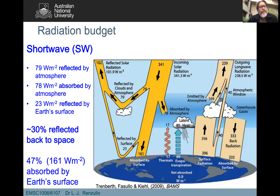We have the shortwave component of 341 watts per square meter coming into the Earth-atmosphere system. Of that, 79 watts per square meter is reflected back into space by clouds and the atmosphere, 78 watts per square meter is absorbed by the atmosphere, and a further 23 watts per square meter is reflected by the Earth's surface on average across the whole globe. Adding up the reflected components, 30 percent of the incoming shortwave radiation is reflected back into space, and 47 percent — 161 watts per square meter — is absorbed by the Earth's surface.